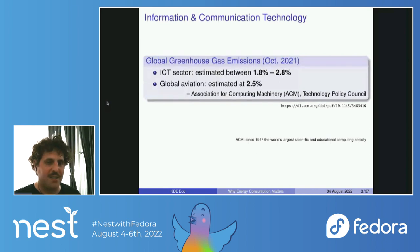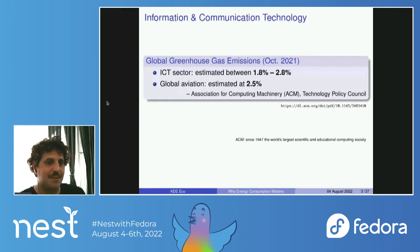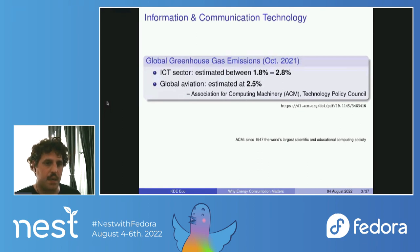Some background before we get started. There's a report from the Association for Computing Machinery from October 2021 which estimates that the ICT sector contributes about 1.8 to 2.8 percent of global greenhouse gas emissions. This includes everything from desktop software to internet services, servers, data centers, and blockchain proof-of-work systems. To put that into perspective, the global aviation industry is estimated to contribute about 2.5 percent — so we're more or less in the same general area.